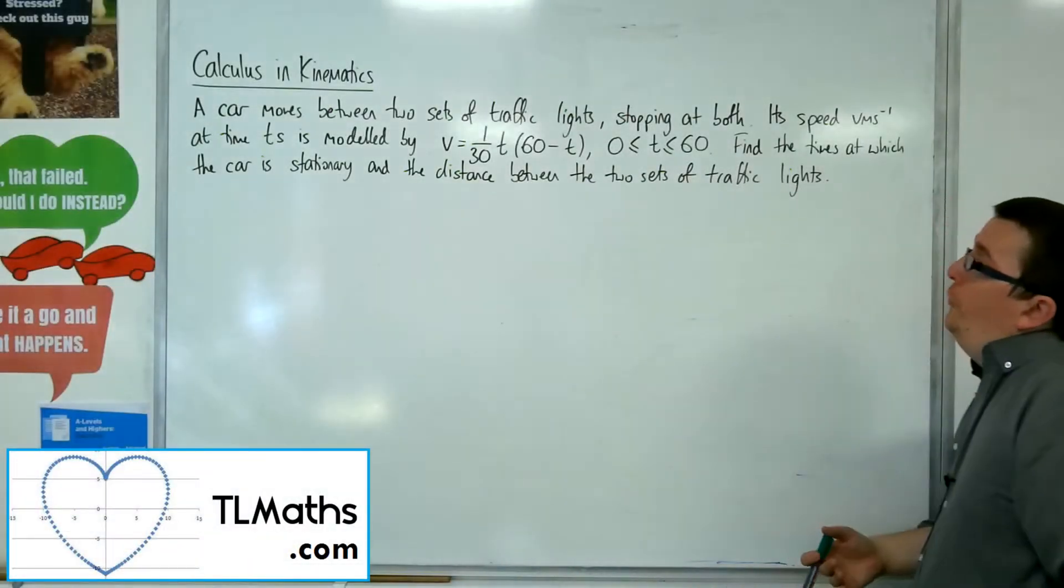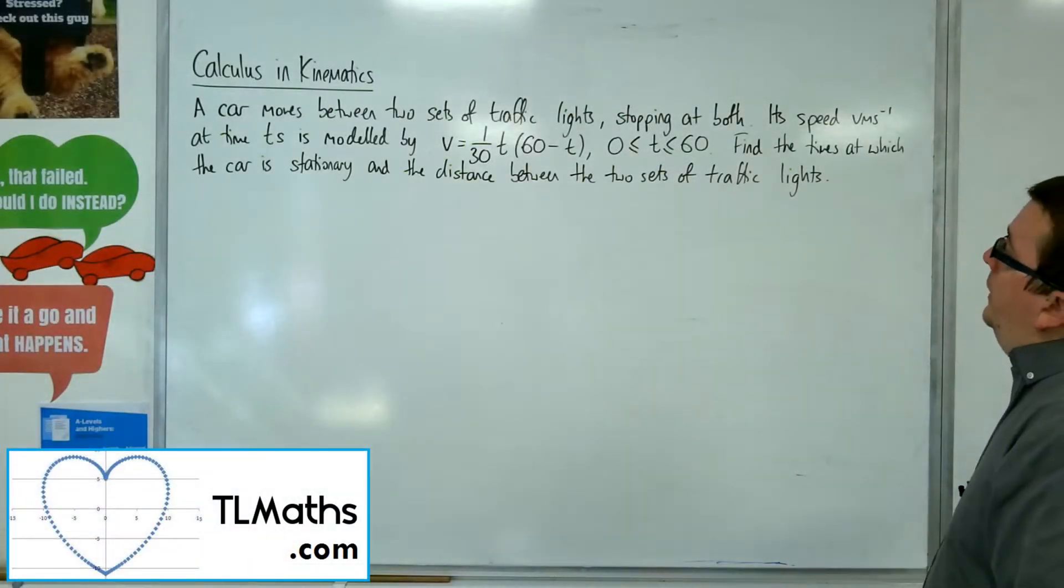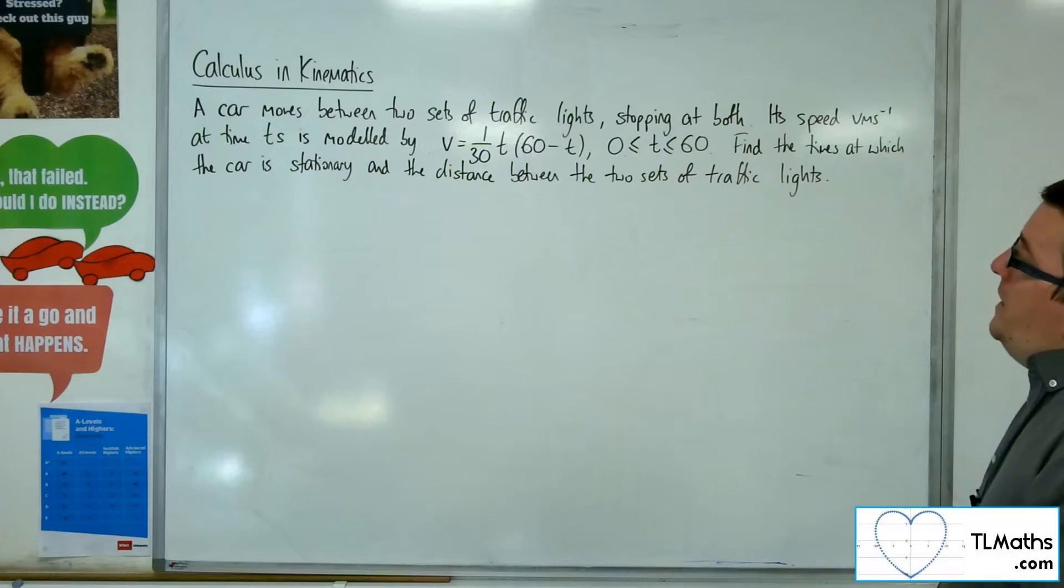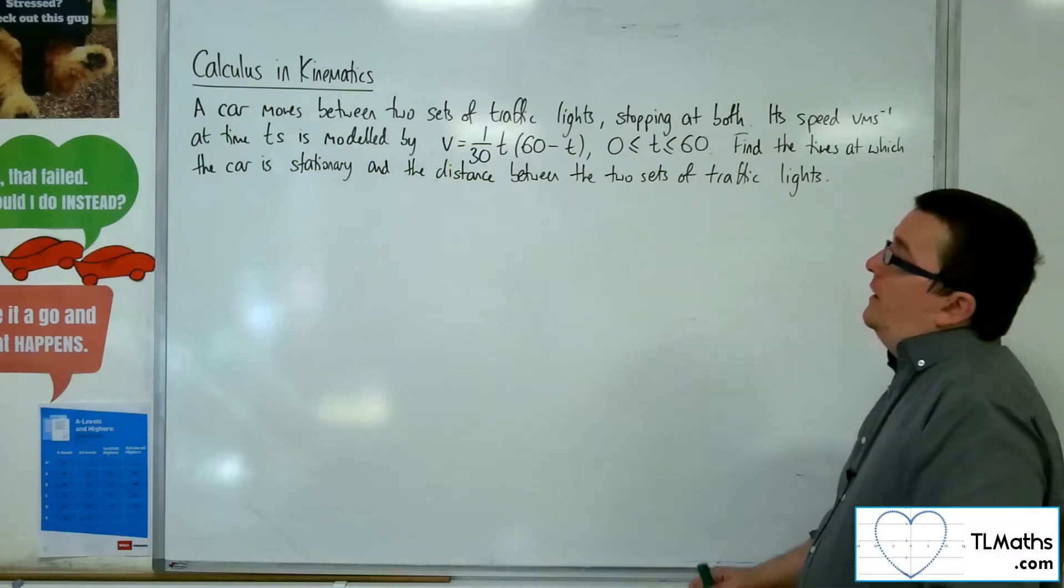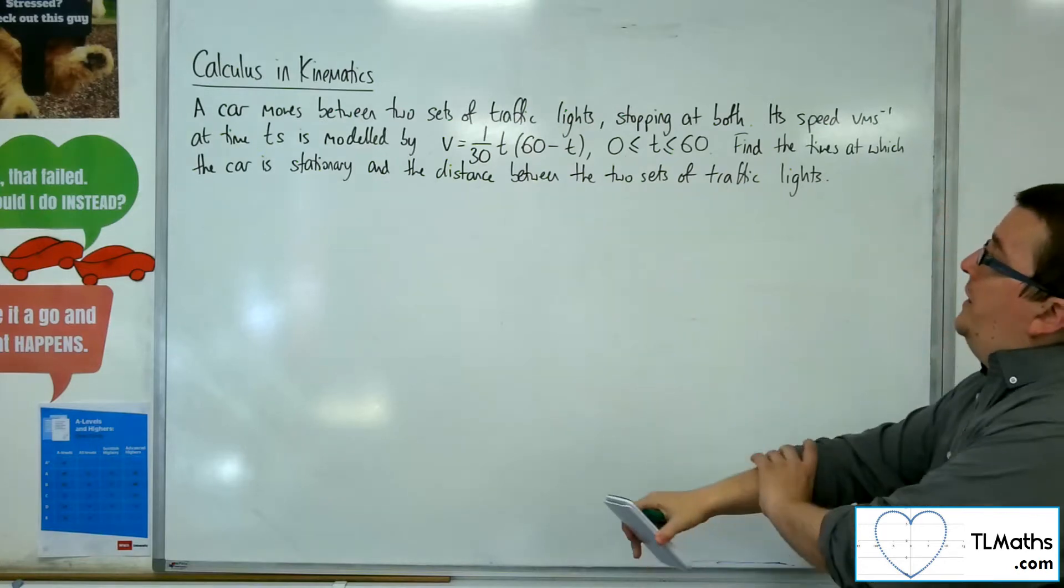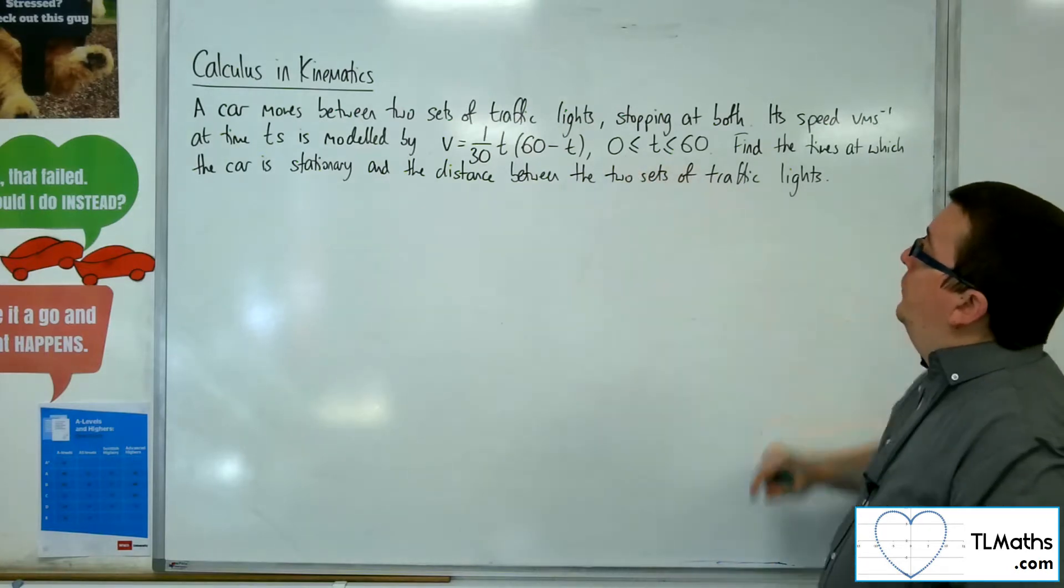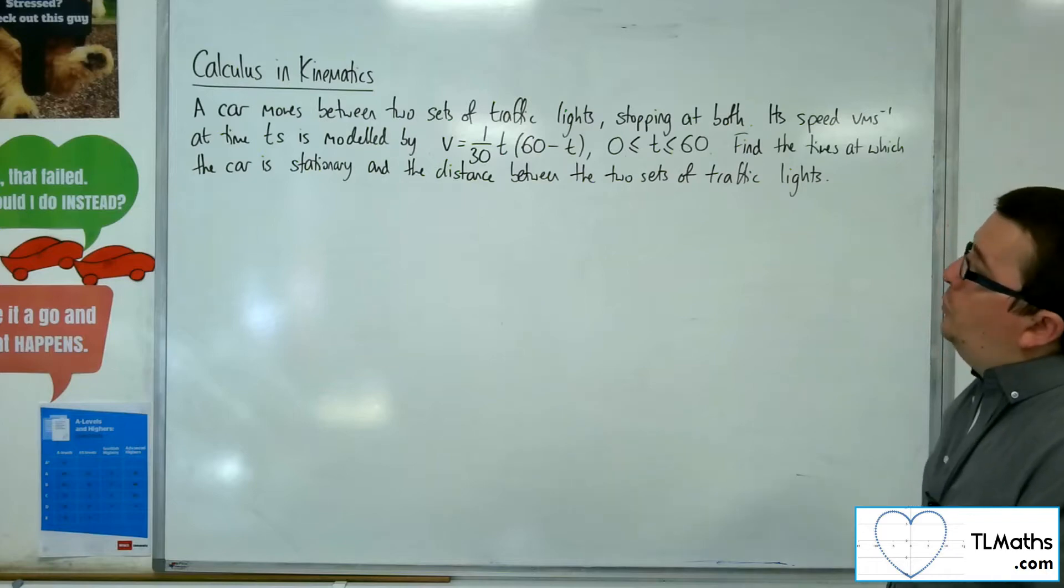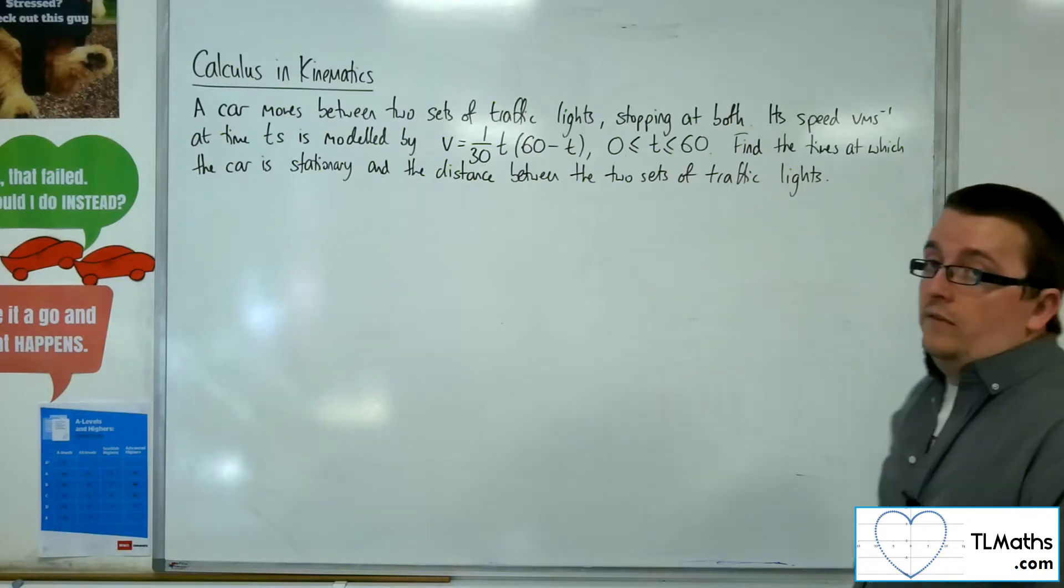In this video, a car moves between two sets of traffic lights, stopping at both. Its speed, v metres per second at time t seconds, is modelled by v equals 1 thirtieth t times 60 minus t, where t, the time, is going between 0 and 60. Find the times at which the car is stationary and the distance between the two sets of traffic lights.